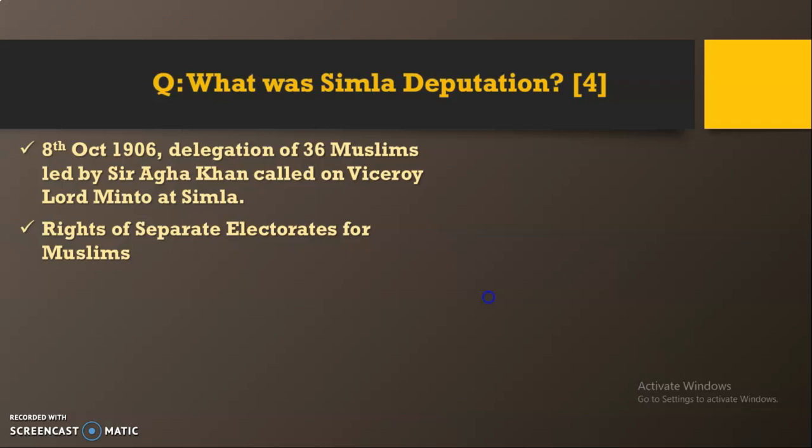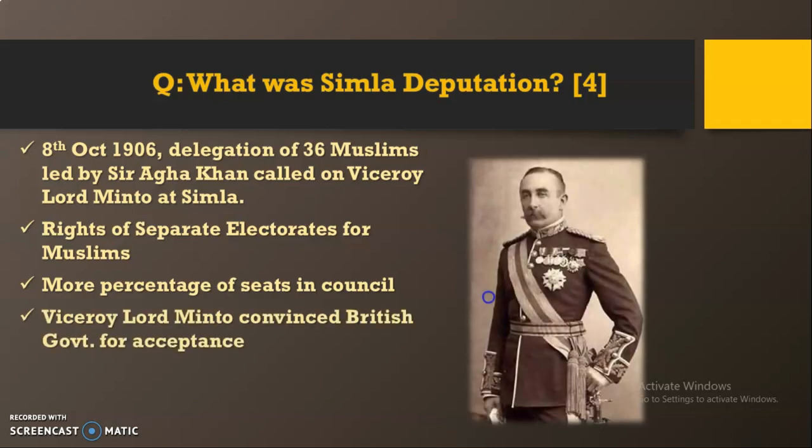There they requested that the position of Muslims in India should be estimated not merely on their numerical strength — as they were the minorities — but in respect to the political importance of their community and the services they rendered to the Empire, as they served in the British Army. They had two basic demands from the British in this Shimla Deputation.